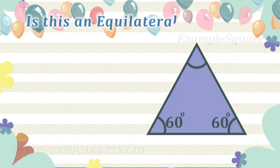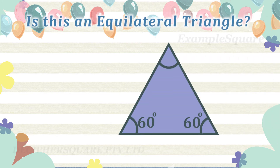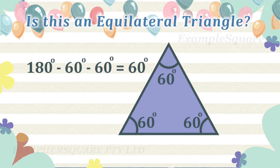Is this an equilateral triangle? Yes, this is an example of an equilateral triangle. The two angles shown are both equal to 60 degrees, and since the sum of three interior angles of a triangle is 180 degrees, the third angle is also equal to 60 degrees. All three interior angles are equal, and so the length of all three sides is also equal.